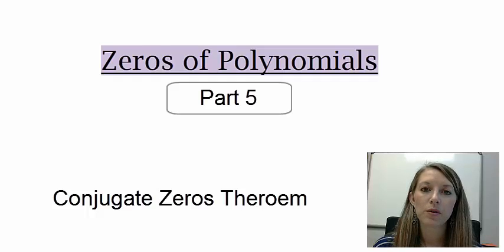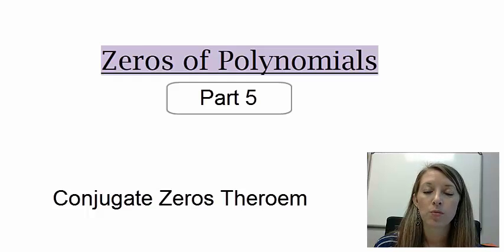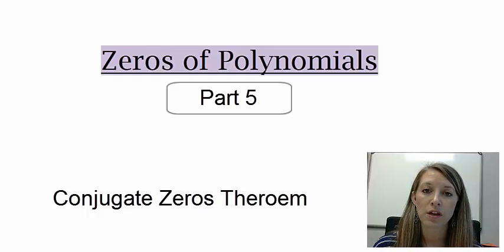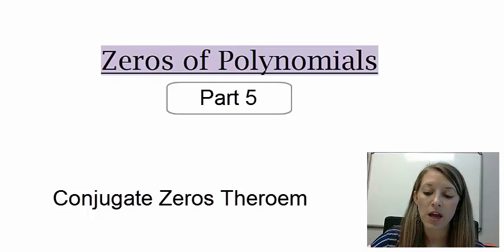In the last two examples, and honestly in the last section, they've been giving us a polynomial and our job is to find the zeros. What we want to do now is reverse this. We want to be able to be given the zeros and then come up with the polynomial that's associated with it. Before we get into the full-fledged example, let's learn a new theorem.